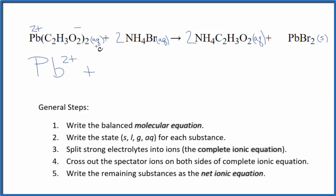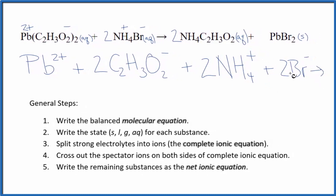And then we have two acetate ions. The ammonium ion - that's always 1+. And the bromide ion - that's 1-. So we have two ammonium ions and two bromide ions. So these are the reactants in our complete ionic equation with lead(II) acetate plus ammonium bromide.